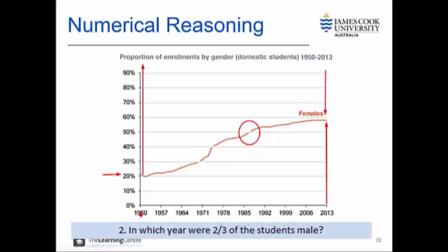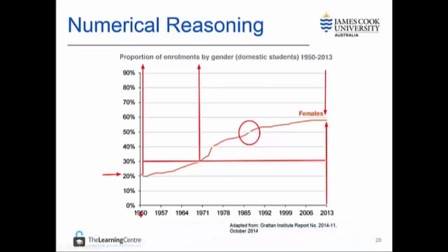We can answer the second question in a similar way. Visually, we can see that two-thirds of the graph above the line occurs in 1971. However, we should also note that one-third is equal to 33.33%, so it actually occurs a few years later in approximately 1973.